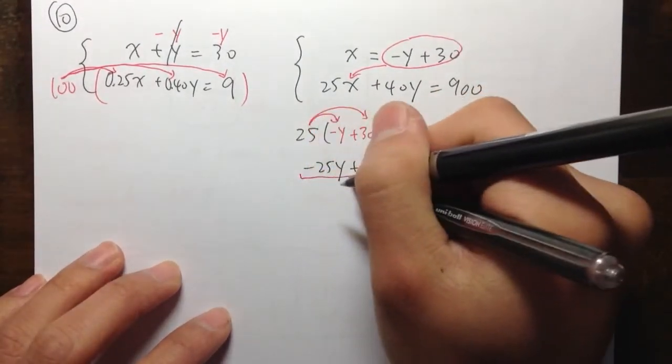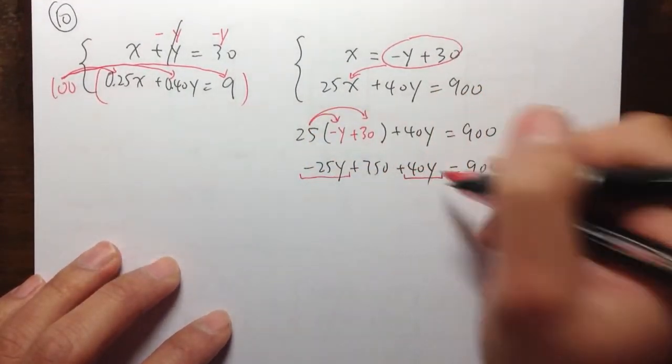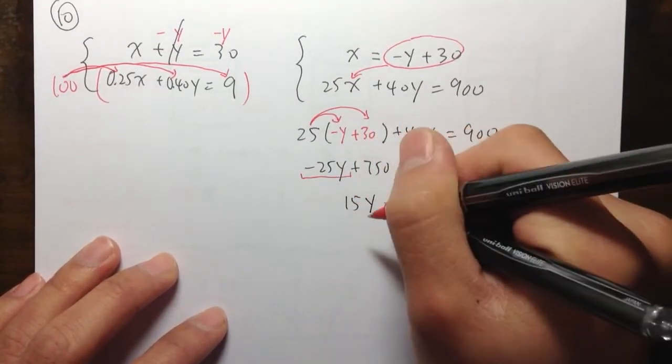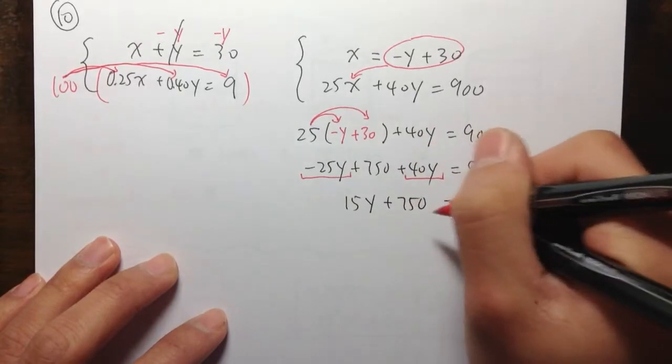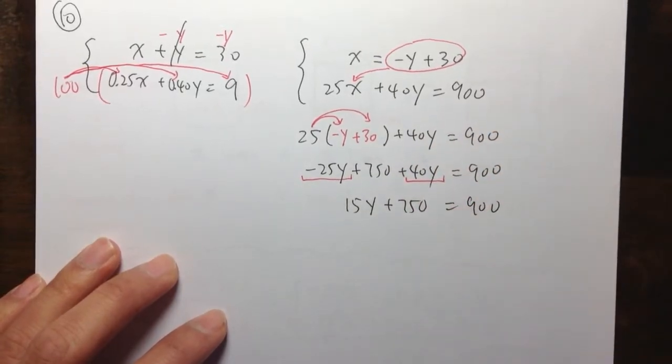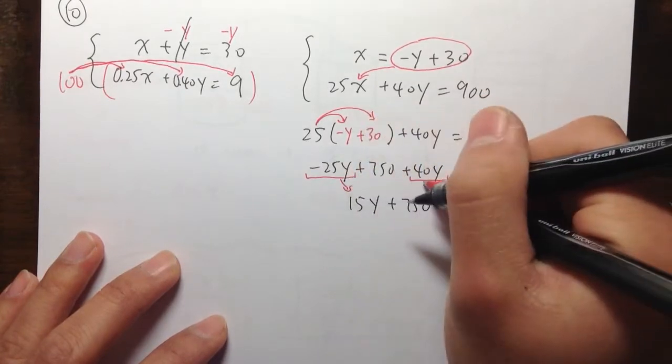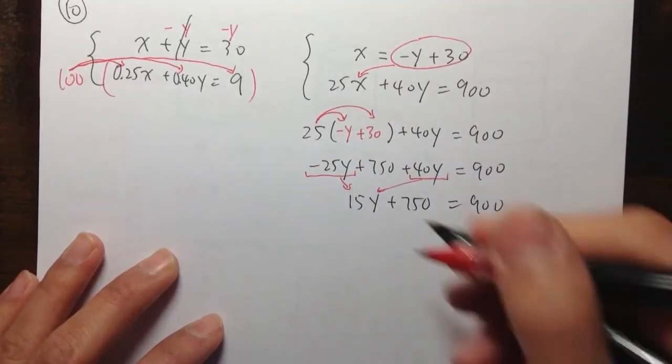Combine like terms on the left-hand side. I see the negative 25y, and the 40y. That will be 15y, and then bring down plus 750, that's equal to 900. So, for this step, I just combine like terms.